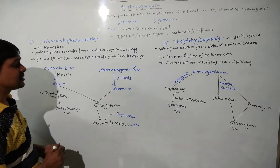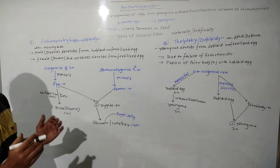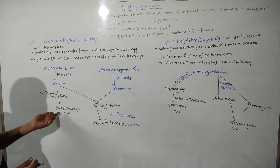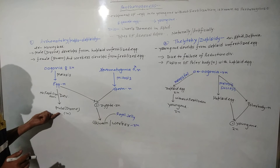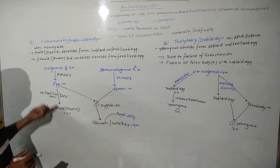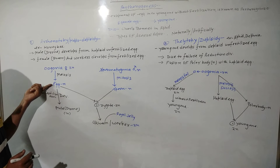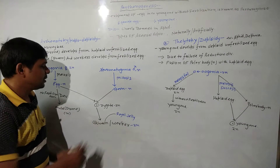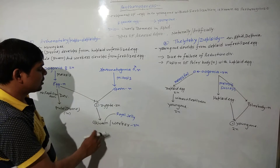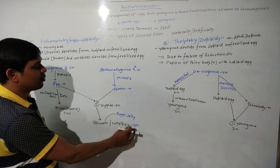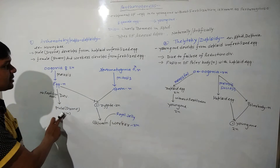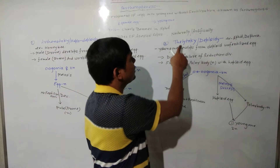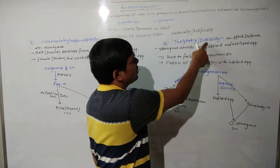So here we can see Parthenogenesis in the case of the Honeybee male, because the male is haploid and it is produced from the haploid egg without fertilization. In the case of the Honeybee, the Queen and Workers are diploid, while the Male — that is the Drone — is haploid. The second type of Parthenogenesis is Thelytoky, which is Diploidy.